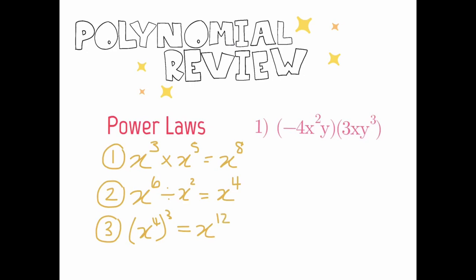Using these power laws, we can answer a whole variety of questions, and I have a couple of examples. In example number 1, we have a monomial times another monomial — when there's no sign and you have two brackets like that, it means multiplication. We're going to multiply both monomials together, and I always begin by looking at my coefficients — these two numbers. Negative 4 times 3 gives us negative 12.